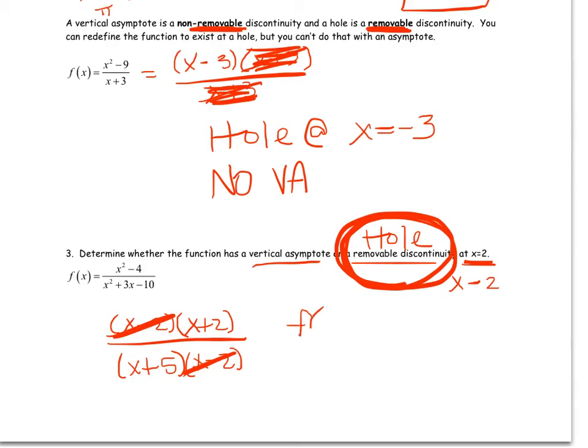Another way to have done this would be to actually just plug into and find f of 2. If you get 0 over 0, again, that points to a hole. And I'm going to switch colors here just to show you. It's not happening in this one. But let's say on another problem, you get a number over 0, any number other than 0. That's when you know you have a vertical asymptote.